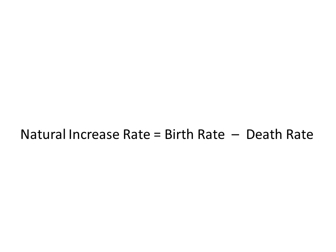Natural increase rate of population equals birth rate minus death rate. Birth rate is the number of live births per 1,000 of population, calculated as the number of live births in a given year divided by total population times 1,000. Death rate is the number of deaths in a given year divided by total population times 1,000.